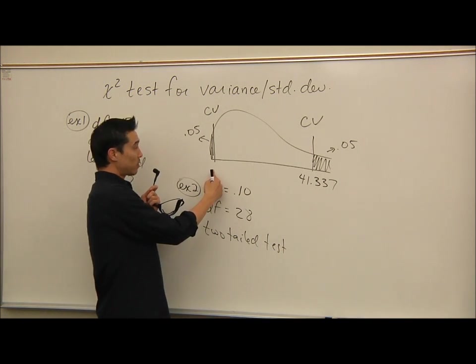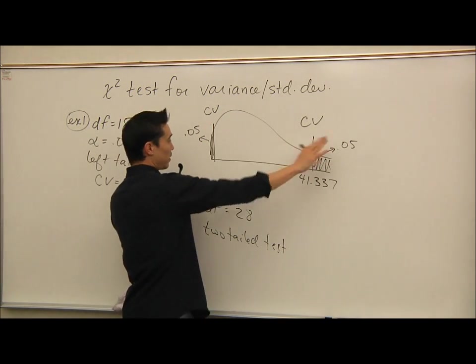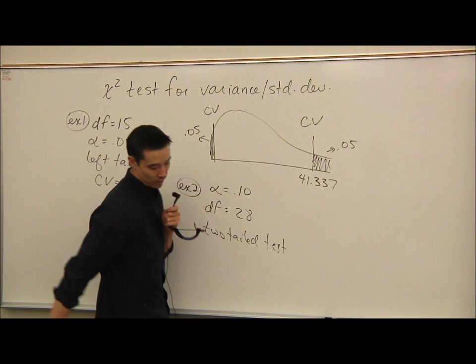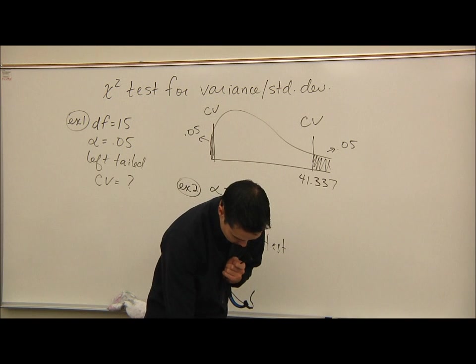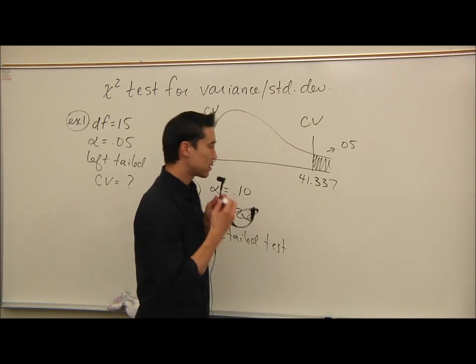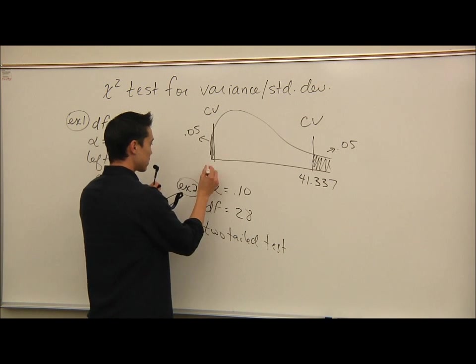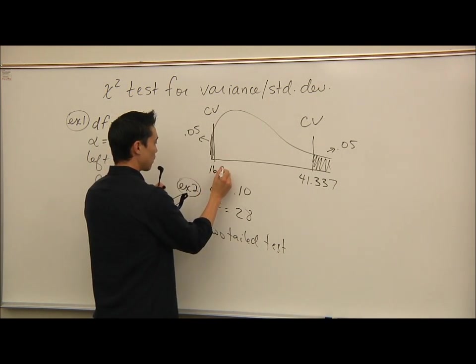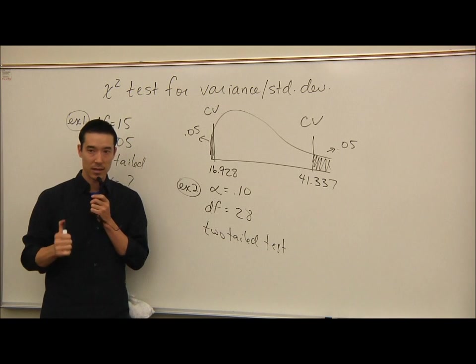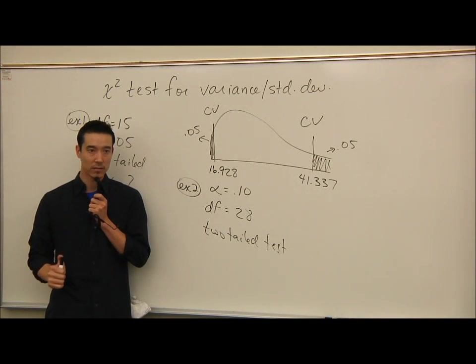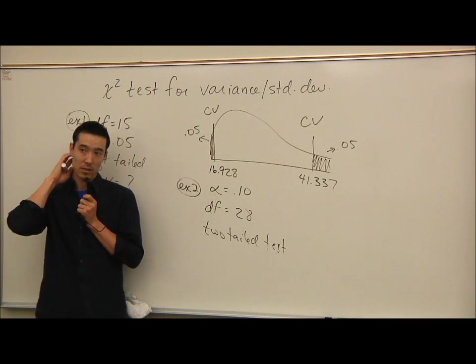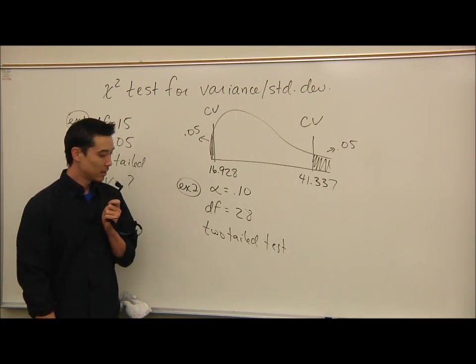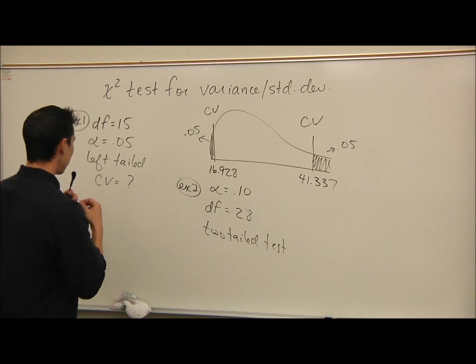That one's pretty easy because my book is set up to give area to the right. To get this left critical value, I need area to the right of this, which would be 0.95. So you get a 0.95, and then go again down to 28 degrees of freedom. And it looks like it's 16.928. So my left value will be 16.928. Any questions on that? Did everybody get those two values? Again, that's crucial because then we're going to do the test value, and then we'll see if we project or not.